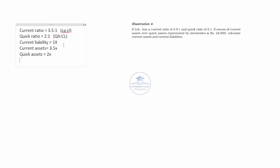Current assets are 3.5x and quick assets are 2x. The difference is inventories. So 3.5x minus 2x equals 1.5x, and 1.5x is equal to 24,000.